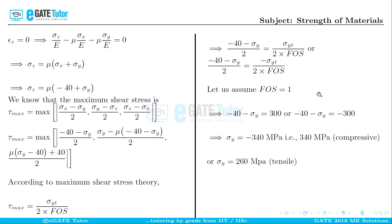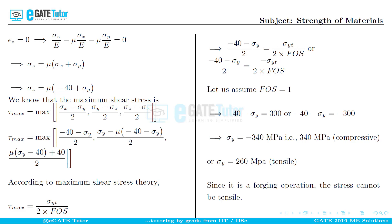The second condition gives sigma_y = 260 MPa tension. However, since this is a plane strain compression forging operation, stresses can never be tensile. Therefore the only valid solution is sigma_y = 340 MPa compressive.